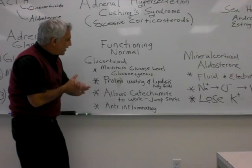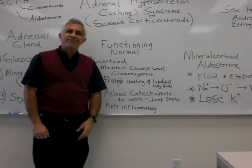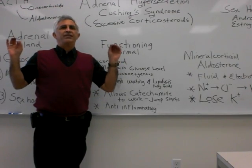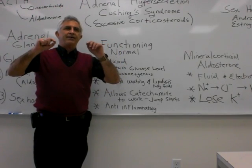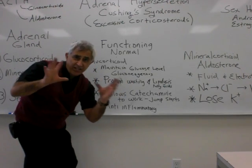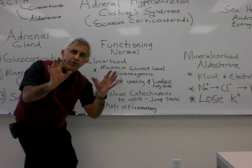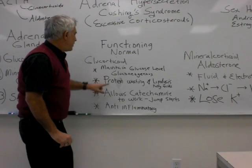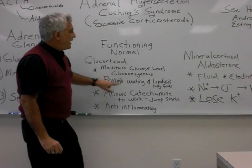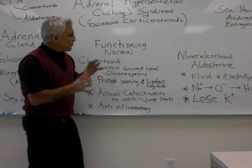Glucocorticoids also cause protein catabolism, or protein wasting. They destroy proteins to the point of breaking down collagen — the matrix in connective tissue. And then there's lipolysis — they have something to do with the breaking down of fats and releasing fatty acids.